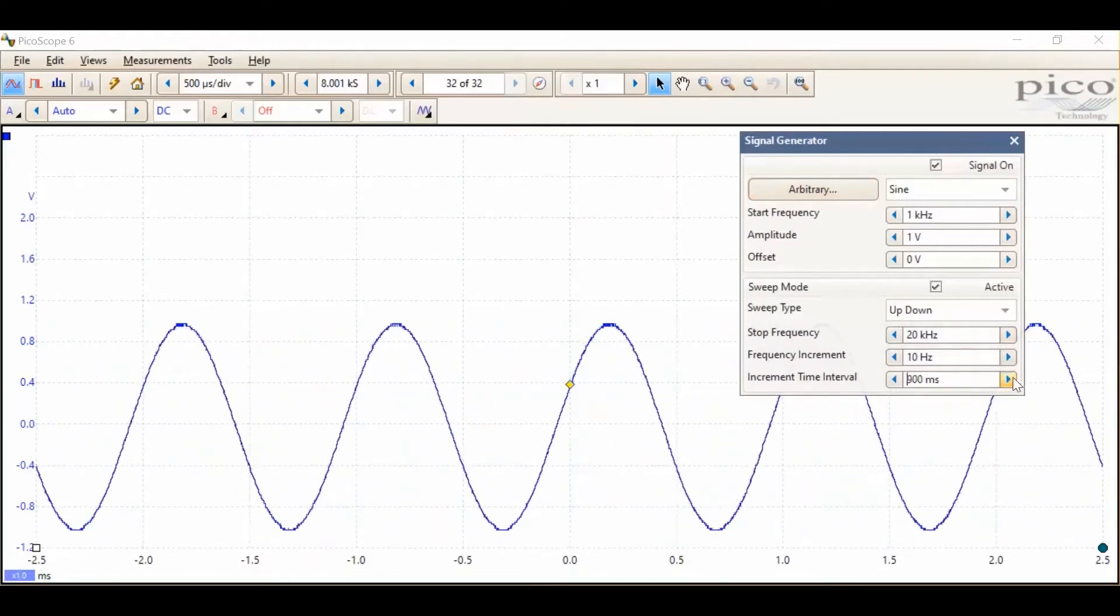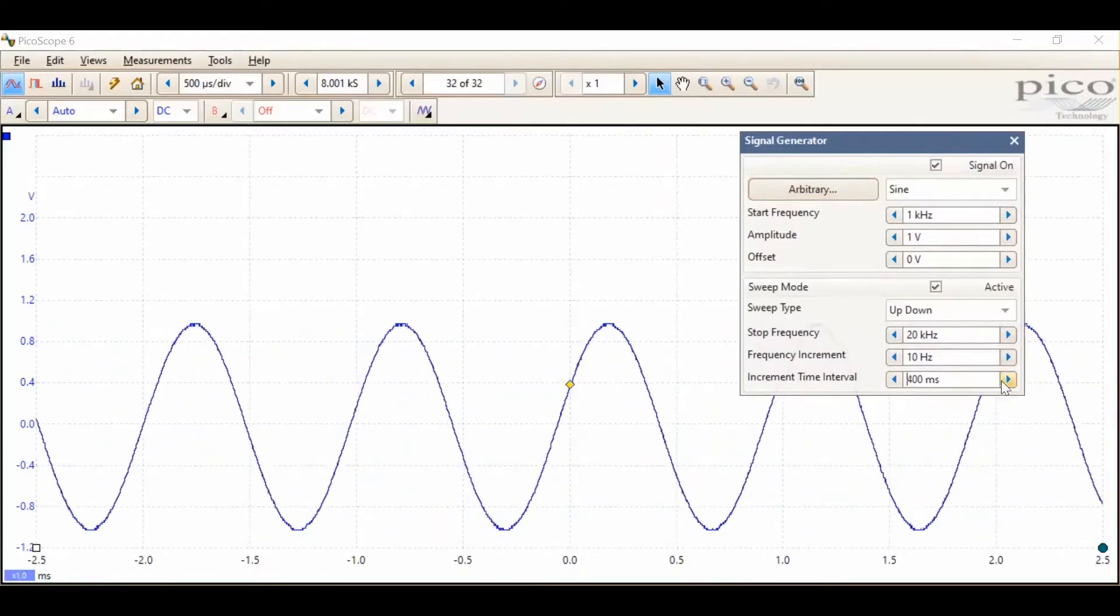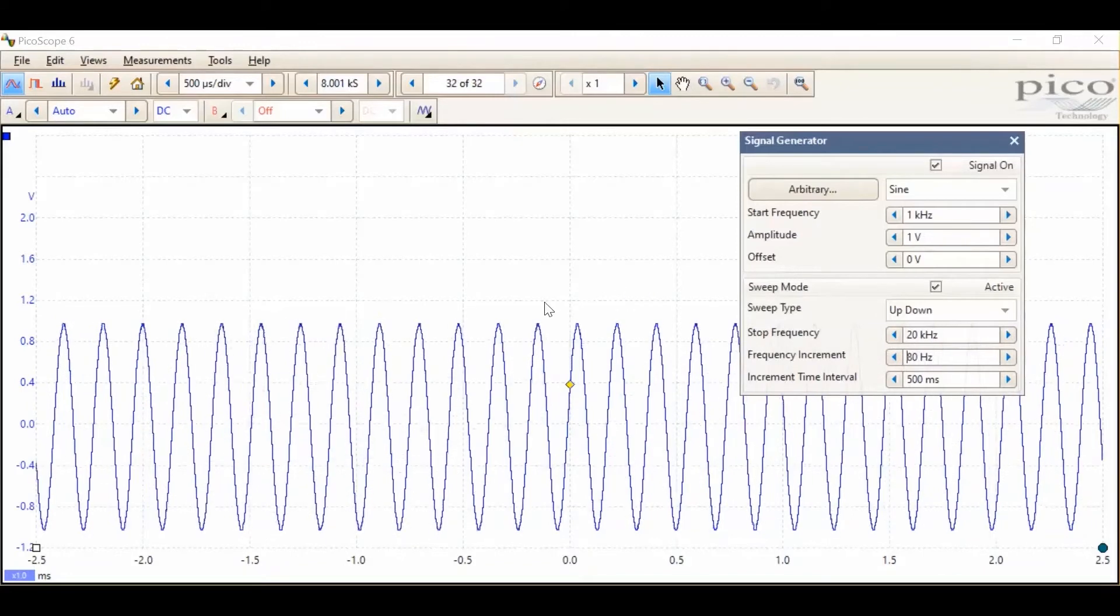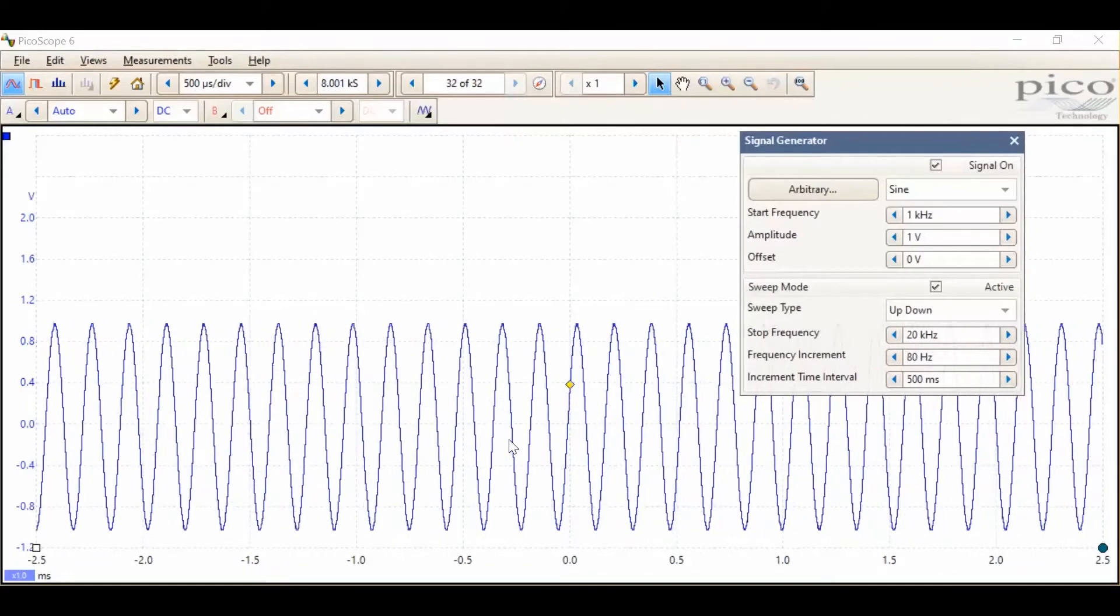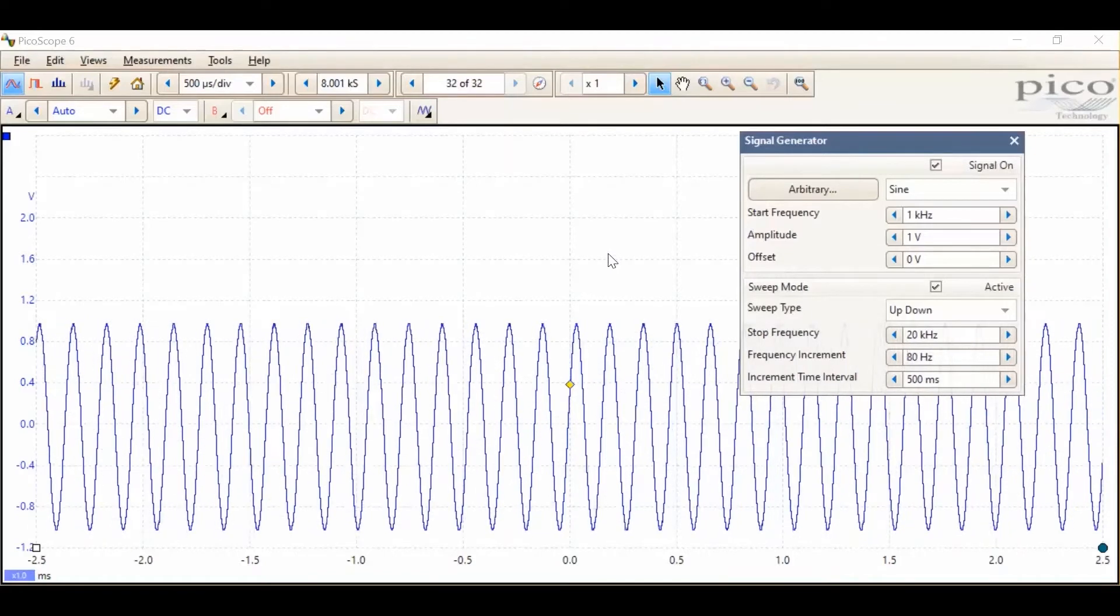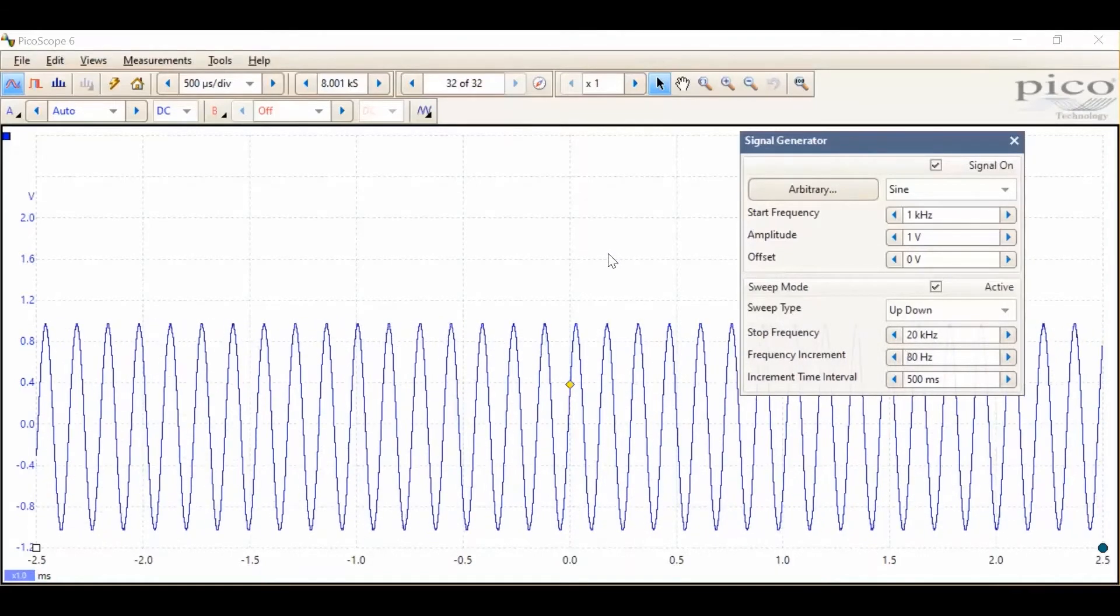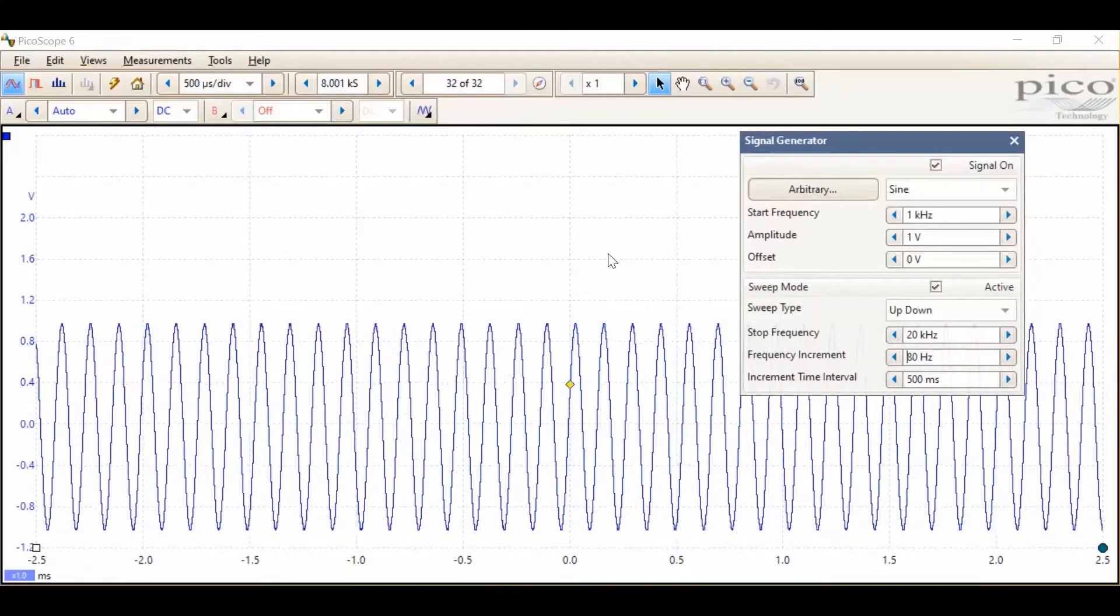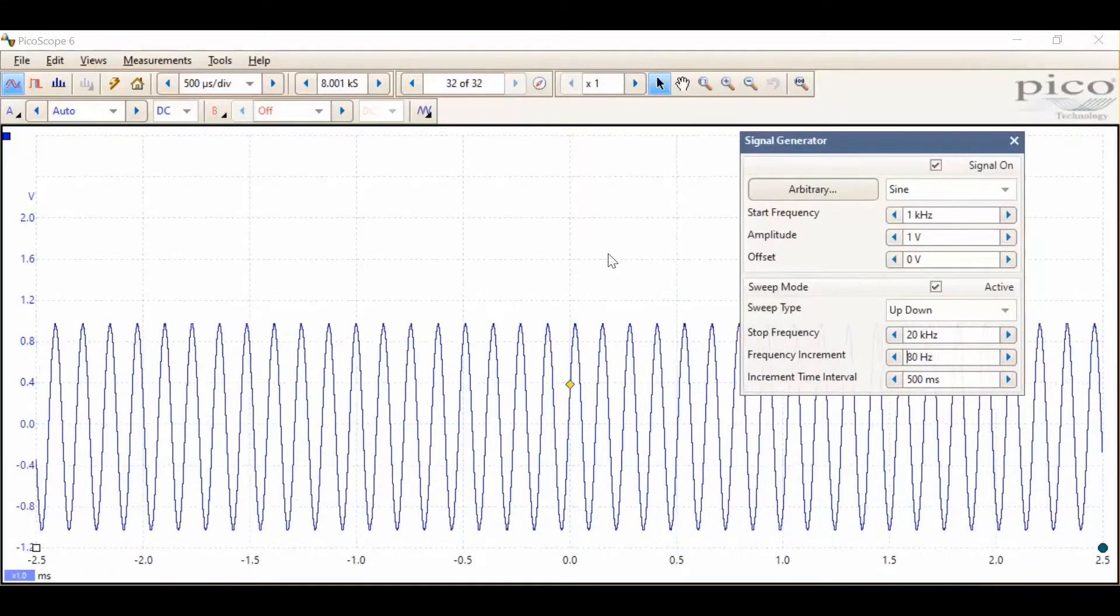So, if we increase the time interval to about half a second between each step and increase the frequency increment, we can see those steps quite clearly. Sweep generators are often used to characterise the frequency response of circuits such as filters or amplifiers. And being able to control the time and resolution of the sweep may be helpful.